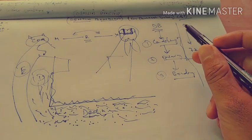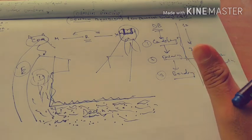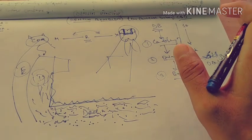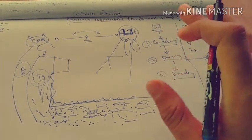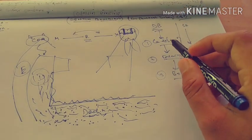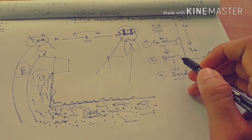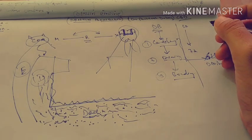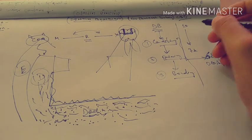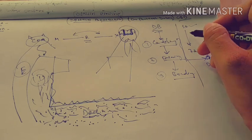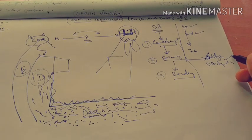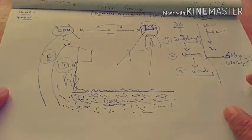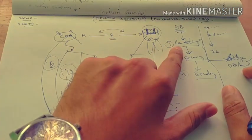In the first and second generation dentin bonding agents, we don't have separate conditioners, primers, or bonding agents. We have it in the same bottle, but the conditioning and priming are not that precise — you won't find them separately labeled as conditioner and primer. So both first generation and second generation are one-bottle solutions.